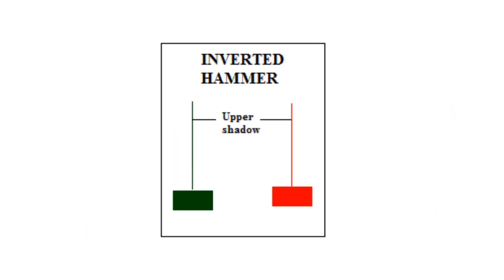Inverted hammer. The inverted hammer candlestick formation occurs mainly at the bottom of downtrends and can act as a warning of a potential reversal upward. Just like the shooting star formation, it is created when the open, low, and close are roughly the same price. There is a long upper shadow, which should be at least twice the length of the real body.